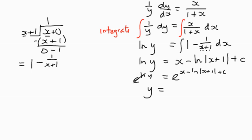We've got here a sum of three different terms: x, minus log x plus one, and plus c. We know that we can split these up using our rules of indices by making them into products of each other. So we've got e to the x multiplied by e to the negative log x plus one multiplied by e to the power c, and we can then do a bit of simplifying.